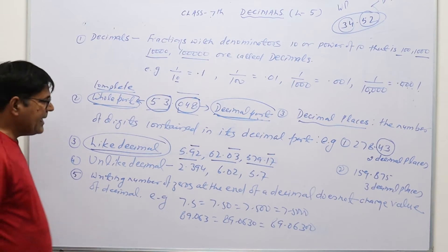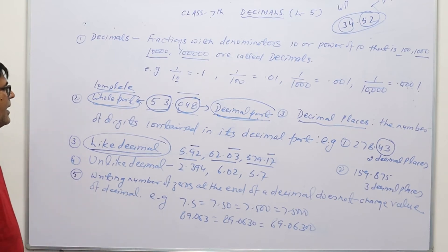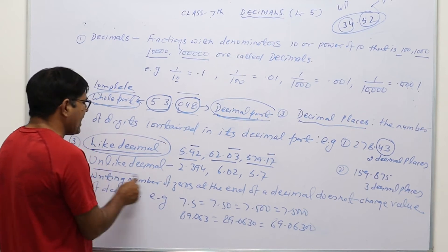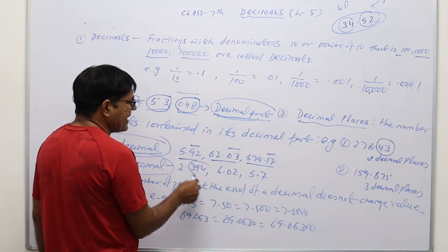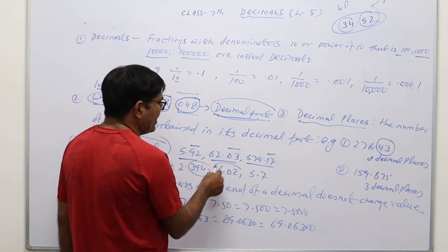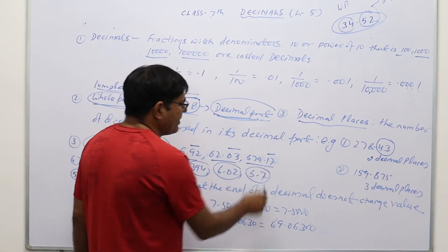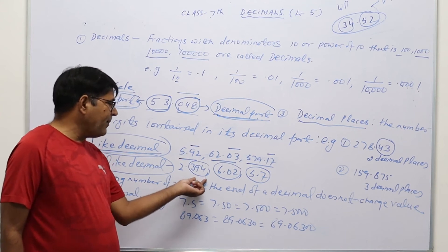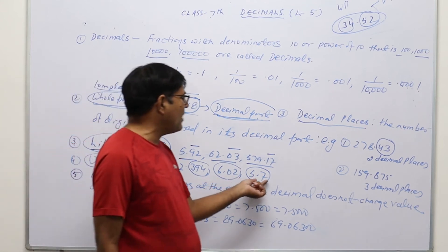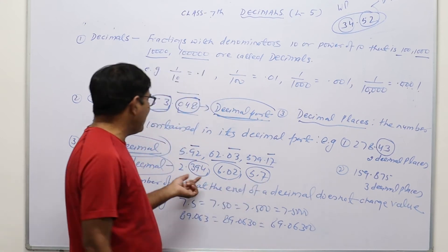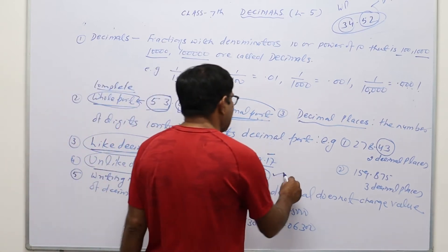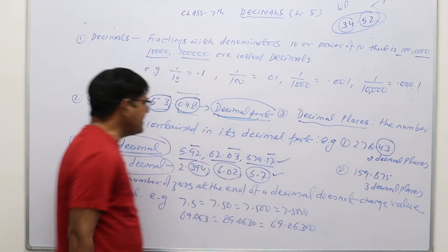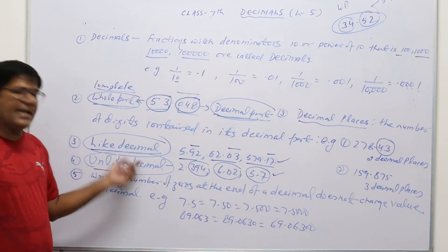And those decimal numbers in which the number of decimal places in the decimal part are different, then such decimals are known as unlike decimals. For example, in 2.394 the decimal places are three, in 6.02 the decimal places are two, and in 5.7 the decimal places are one. So everywhere the decimal places are different, so such decimals will be tabbed as unlike decimals, and those in which decimal places are equal are called like decimals.